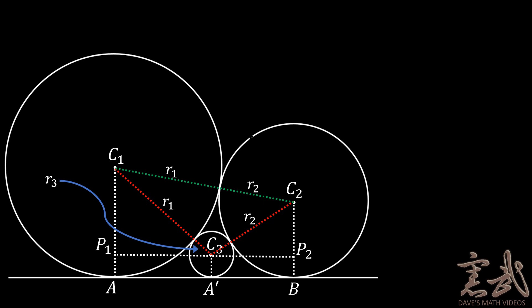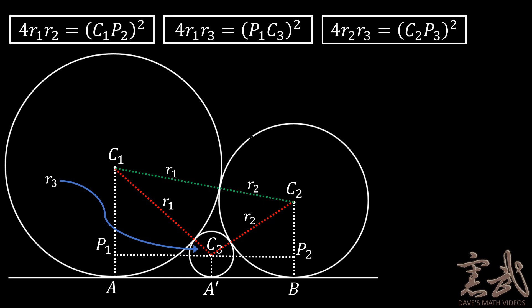Now, because all three of these circles are tangent to each other and they're also tangent to the baseline, we can use the same relationship that we found in the previous slide. And we can write down these three relationships. 4 times R1 times R2 is equal to C1P2 squared.